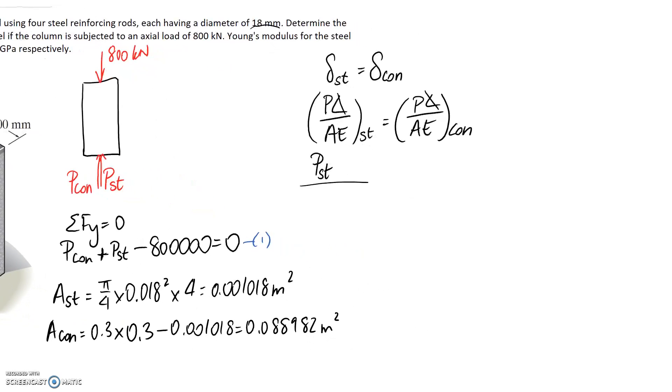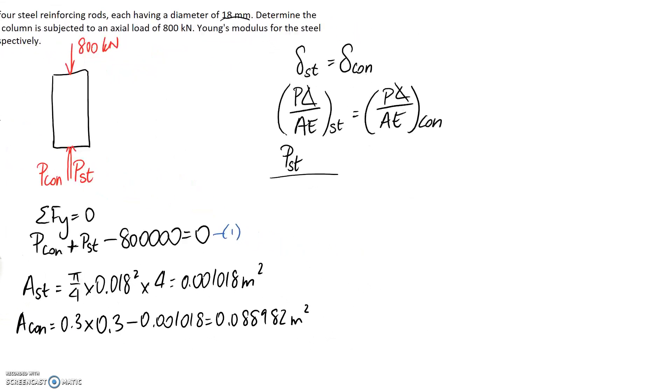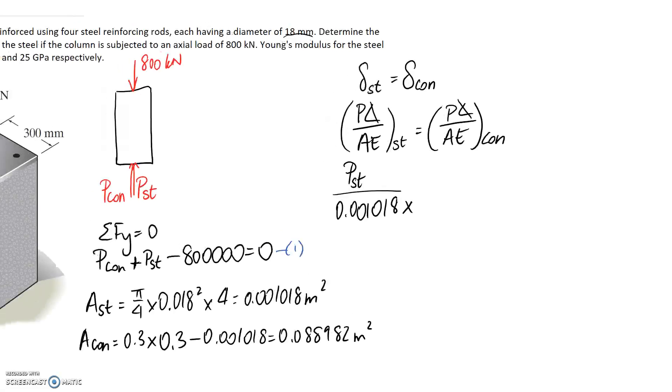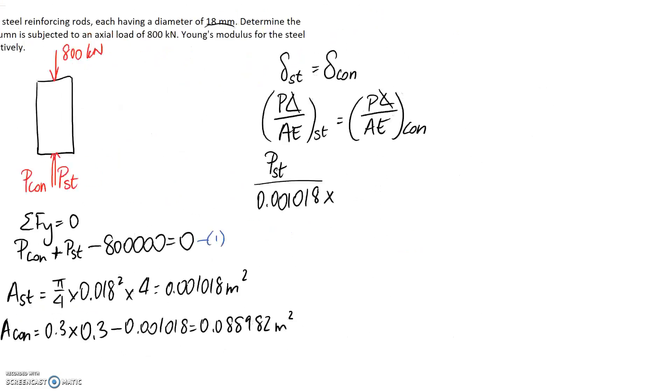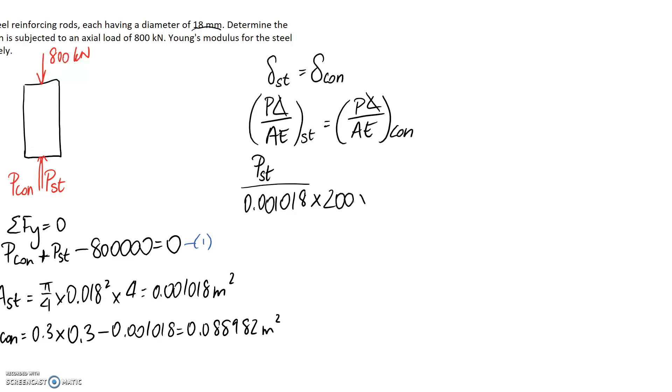So let's jump over here and substitute it in. We've just said that the area for the steel is equal to 0.001018. And the other thing that we need is Young's modulus for steel. We were given that, we're told it's 200 GPa.